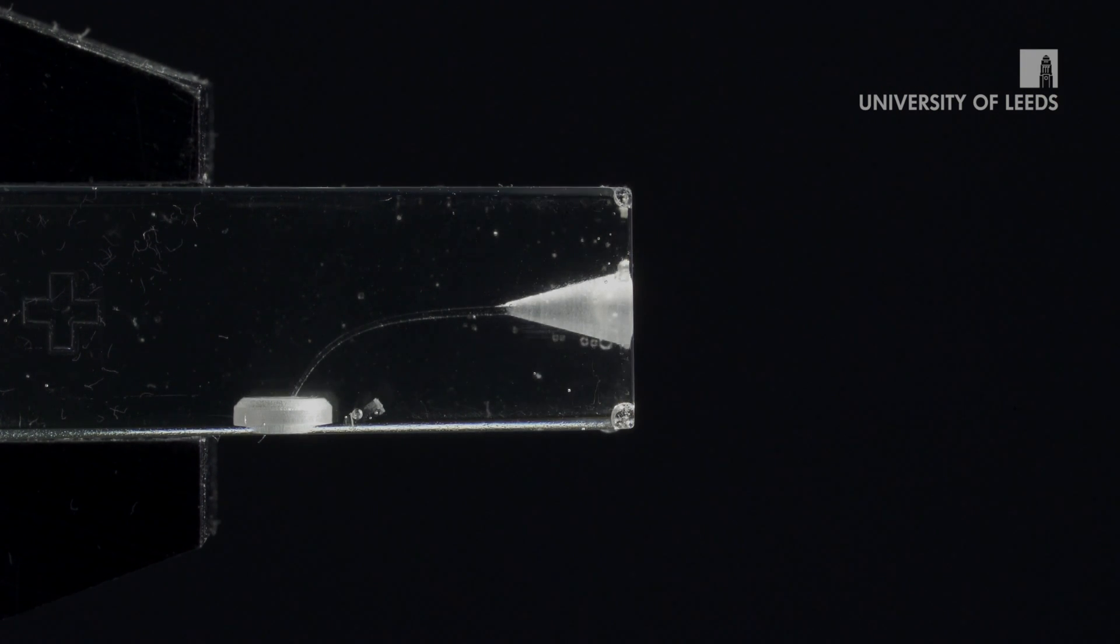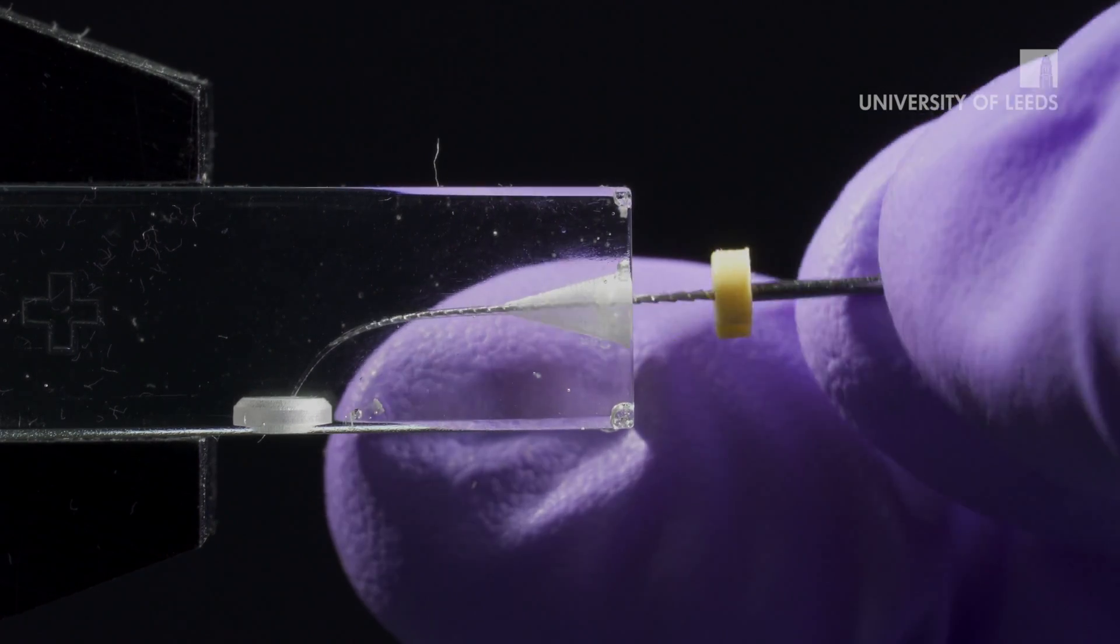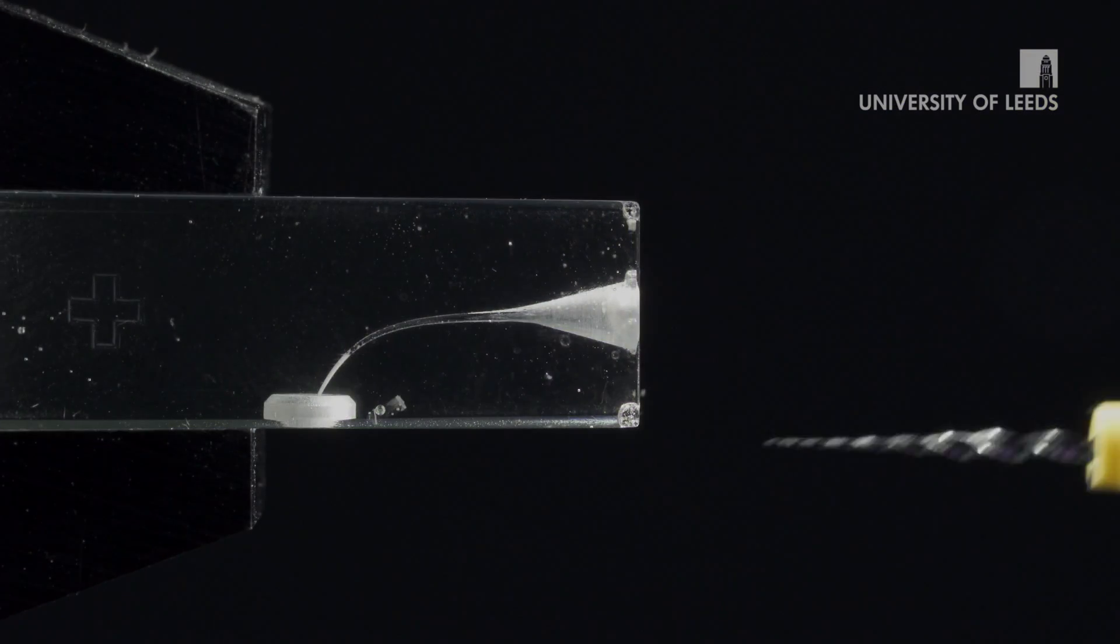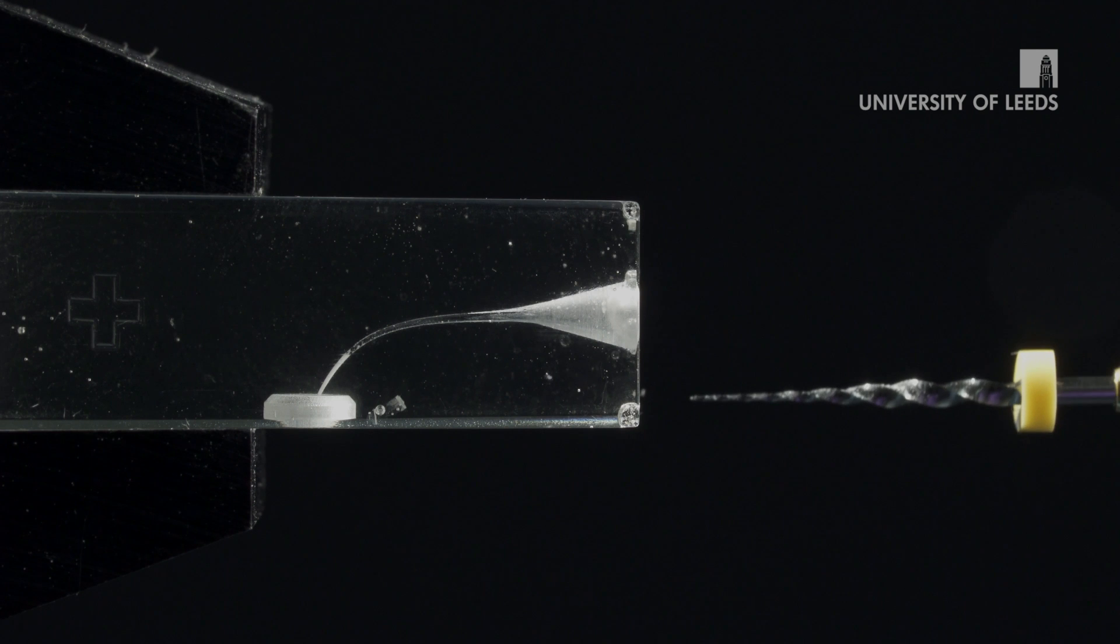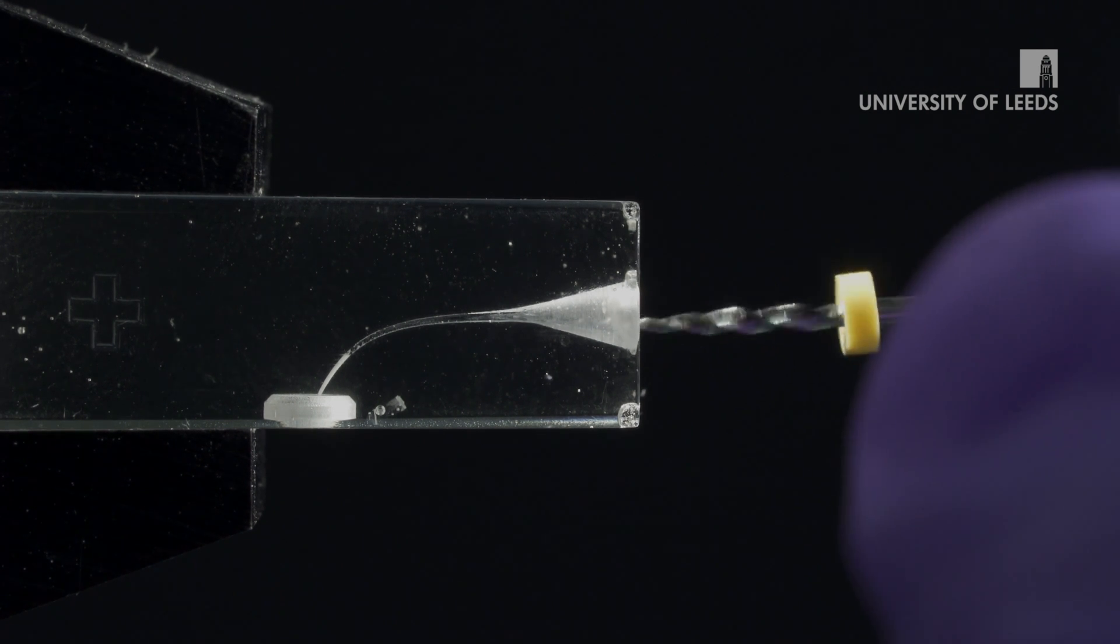After each file is used, the canal should be irrigated. Having secured the coronal glide path, the rotary X1 file is now used. This file has a 0.19 millimeter tip and variable taper along its length.